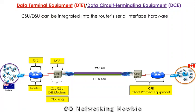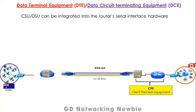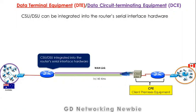CSU/DSU can also be integrated into the router. Nowadays it is common to integrate the CSU/DSU into the serial interface hardware of the router, combining both into one device. So we can have CSU/DSU as a separate entity, or we can have it embedded within the router's serial interface hardware.